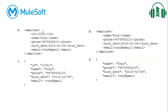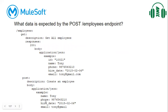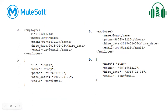Looking at the options: A and B are in XML format, so we can remove those. C and D are both in JSON format, so we compare those two. Our schema values are name, phone, hire date, and email. Option C has an extra 'ID' field which is not in the schema. Option D has name, phone, hire date, and email — matching exactly. So D is the correct answer. To create an employee, we need to send the request message in that format.